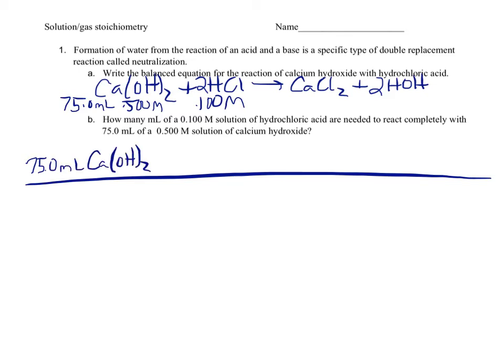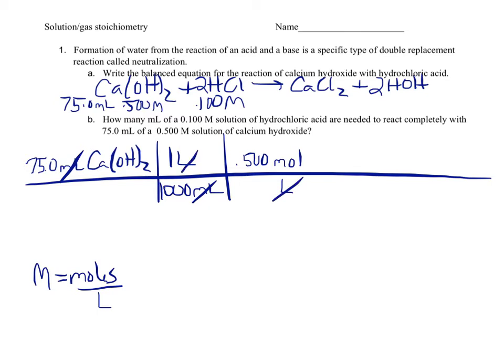You have three numbers and you have to decide which one to start with in your bridge problem. You always want to start with a measured quantity. So I'm going to start with the 75 milliliters of calcium hydroxide. Since this is in milliliters, and remember that big M is moles per liter, I need to get from milliliters to liters. So I'm going to cancel my milliliters, and then I'm going to use my molarity, 0.500 moles per liter.